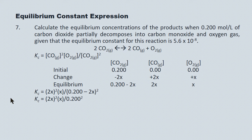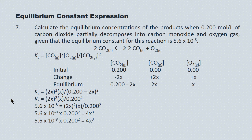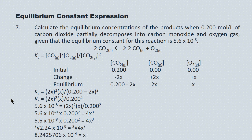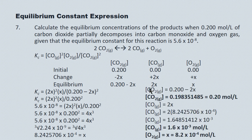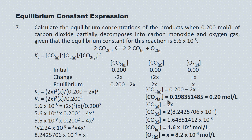Plugging in the Kc value and cross multiplying, we take the cube root of both sides to get x = 8.24 × 10⁻⁴. Substituting back: CO2 at equilibrium is 0.20 mol/L, CO is 1.6 × 10⁻³ mol/L, and O2 is 8.2 × 10⁻⁴ mol/L. Plugging those three concentrations back into the original Kc expression confirms the answer as 5.6 × 10⁻⁸.